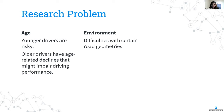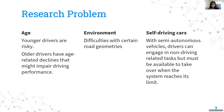Since younger adults also have greater acceptance and positive perception of autonomous vehicles, a large proportion of this population might use semi-autonomous vehicles. With semi-autonomous vehicles, drivers can engage in non-driving related tasks during automation but must be available to take over when the system reaches its limits. Current research has examined takeover performance of older adults while multitasking with varying levels of traffic density, weather conditions, and levels of disengagement.